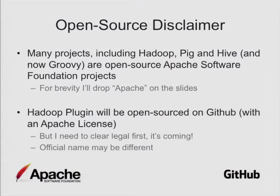First, I want to say this is an open source talk. It involves a lot of open source pieces of technology, including especially Hadoop. In the Hadoop ecosystem, most of these things are open source and fall under the Apache Software Foundation. So the proper name of these things is Apache Hadoop, Apache Pig, Hive, and so on. But I'll just call it Pig, Hive. Groovy is now actually an Apache project as well. The Hadoop plugin, which we've been working on at LinkedIn, will be open source.